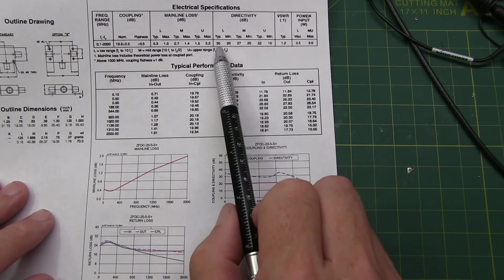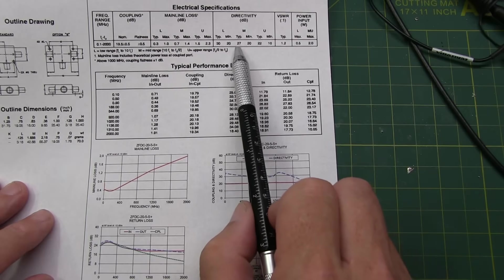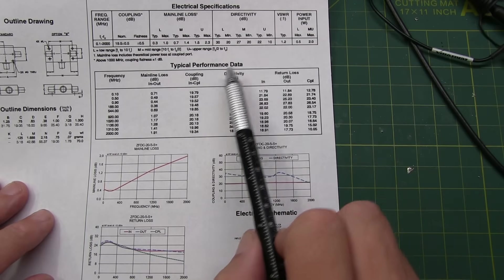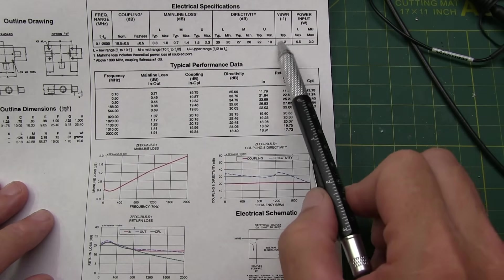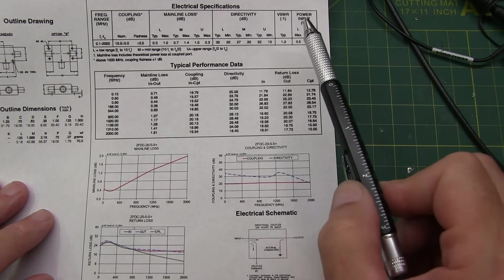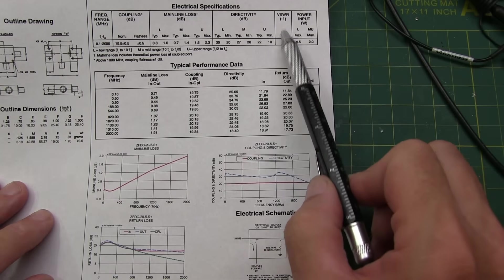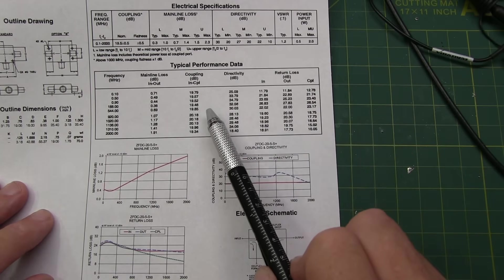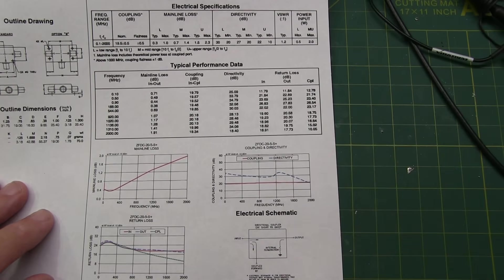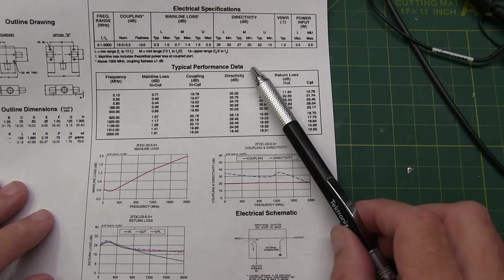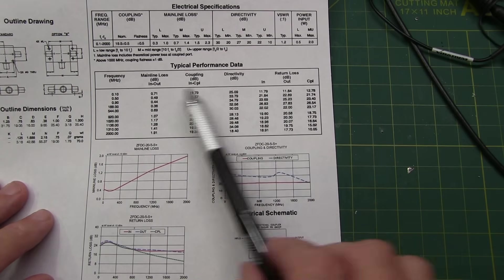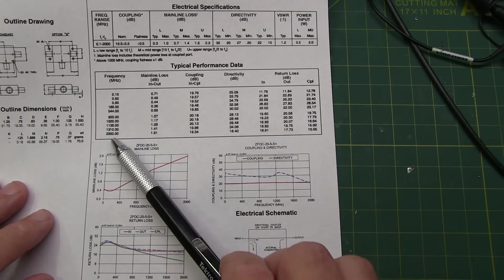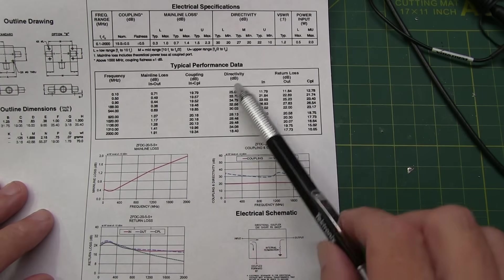They show the SWR, which is just another way of expressing a return loss, as 1.2 to 1, and then it's rated for power. We're not going to test anything with respect to power. And the datasheet also has some typical performance data. This is not exactly what our device will measure at, but it should be reasonably close in terms of, you know, they measure over frequency for the mainline loss, the coupling, directivity, and return loss.